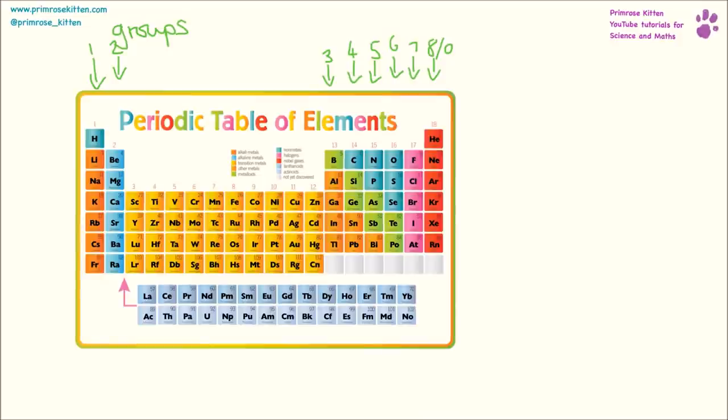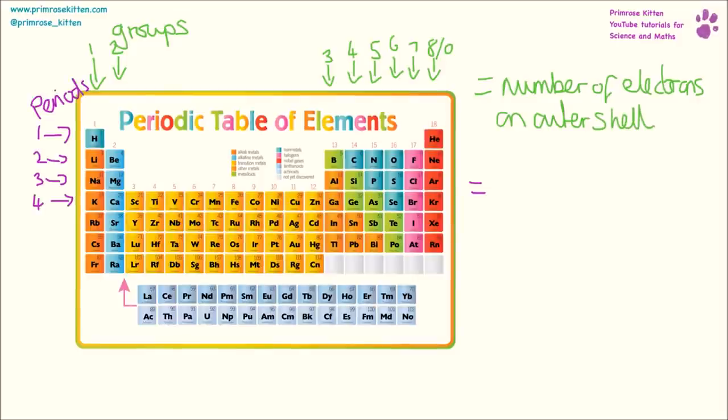The periodic table tells you a lot more than you actually think. On the periodic table, we have groups. These go down, increasing in number as we go across. And the groups tell us the number of electrons on the outer shell. The periods go across like this. Don't forget period number one. Everyone always forgets period number one because it's tiny and only has hydrogen and helium in it, but it's really important. Period number two, period number three, period number four increasing as you go down. And this tells us the number of electron shells.